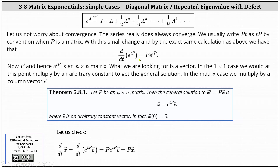Now p, and hence e to the power of tp, is an n by n matrix. What we are looking for is a vector. In a one by one case, we would at this point multiply by an arbitrary constant to get the general solution. In this case, we multiply by a column vector c. Looking at the theorem below, if p is an n by n matrix, then the general solution to x prime equals p times x is x equals e to the power of tp times c, where c is an arbitrary constant vector.